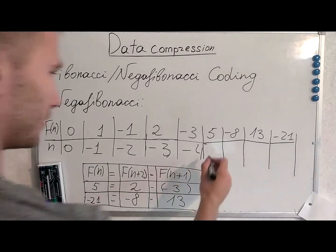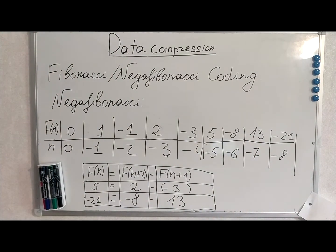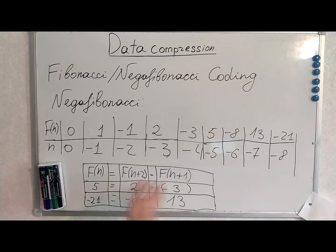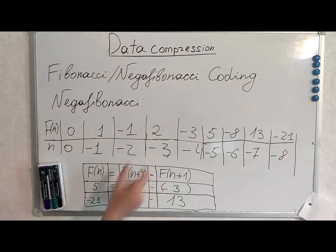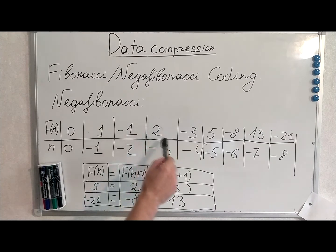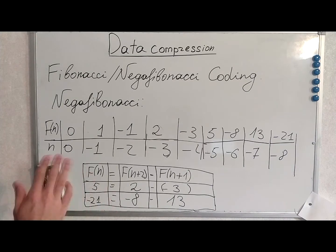If the previous example was not very convincing, I have prolonged the sequence further and prepared a table with examples where you can clearly see the pattern. F(N), an arbitrary number, equals the two previous numbers in the sequence. In the negative sequence you get bigger numbers going left. You can see the example: 5 equals 2 minus (-3). So F(N) = F(N+2) minus F(N+1). You can follow this pattern to prolong your sequence.